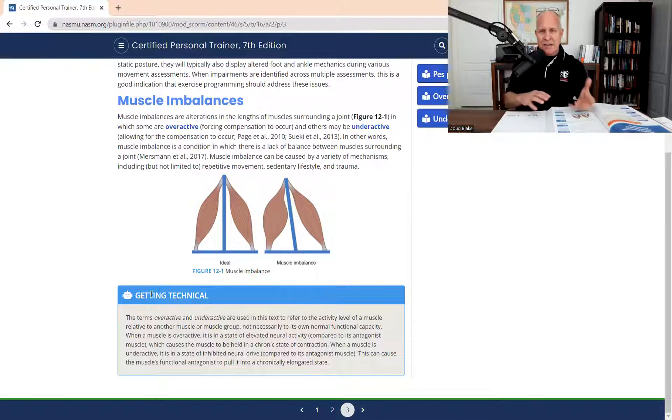Because when we talk about overactive and underactive muscles, the key thing to remember is that overactive and underactive refers to the muscles in relation to their antagonistic muscles. This is why we don't talk about just an overactive muscle. If a muscle is overactive, de facto, its antagonistic muscle must be underactive.